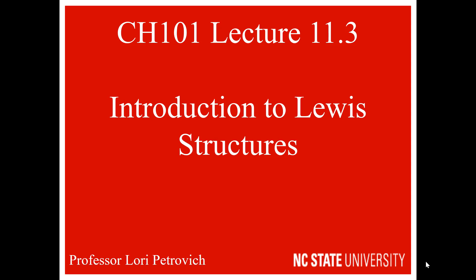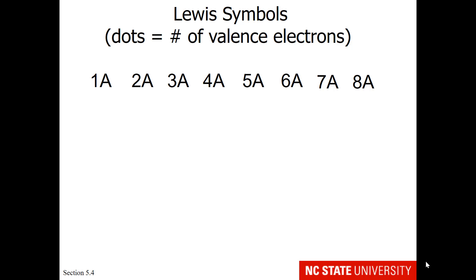The next part of Lecture 11 is an introduction to Lewis structures. In a previous lecture, the idea of Lewis symbols was presented. This is where we take the atomic symbol and place dots near the symbol, which equal the number of valence electrons.